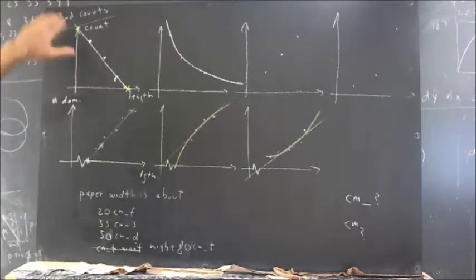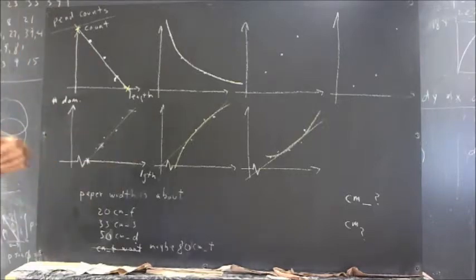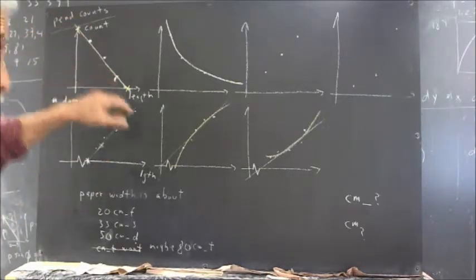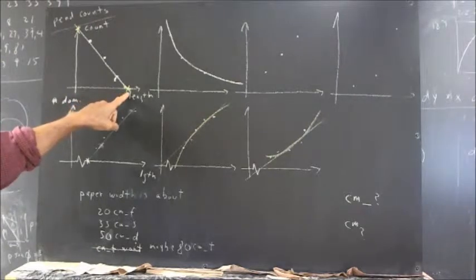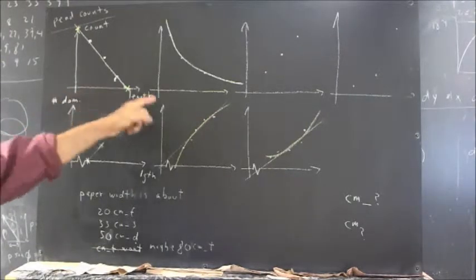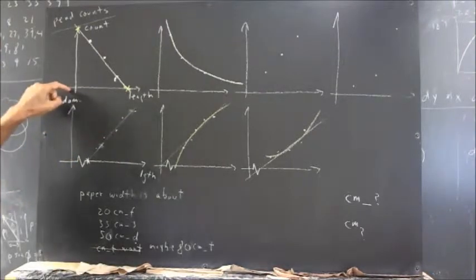You should try to think, what is it about this graph that just doesn't work for pendulum count versus length? Well, the kicker is this point here. At this point, you've got some finite length, but you've got a zero count.